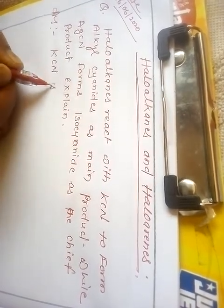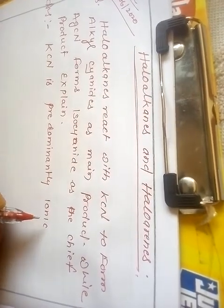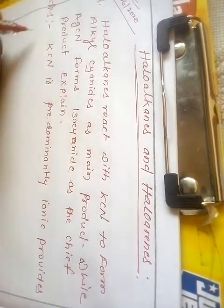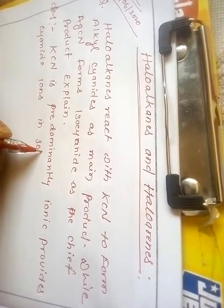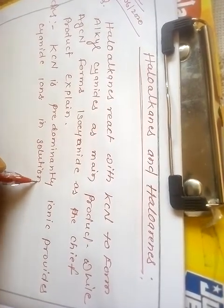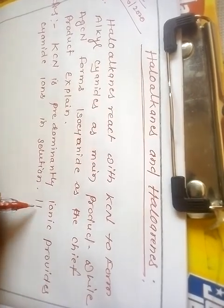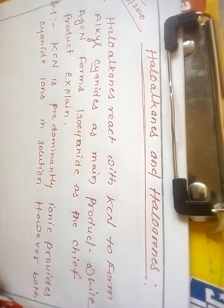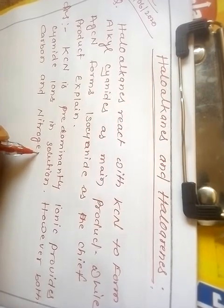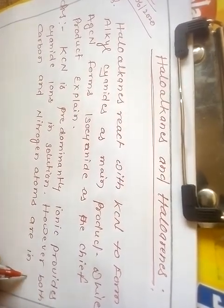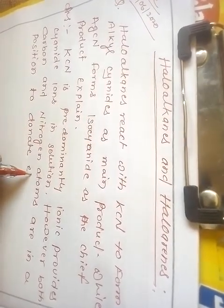KCN is predominantly ionic in nature. It provides cyanide ion in solution. KCN provides K⁺ and CN⁻ ions in solution. However, both carbon and nitrogen atoms are in a position to donate electron pairs.